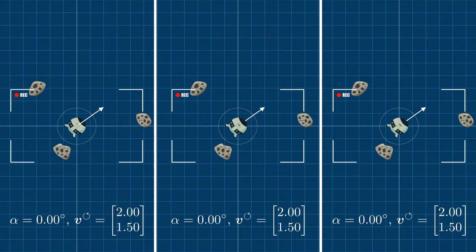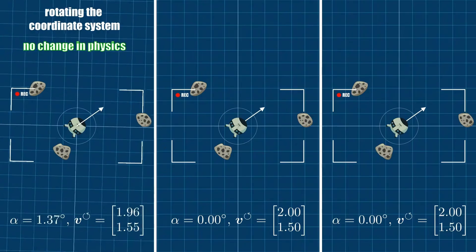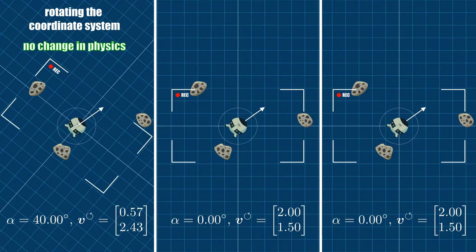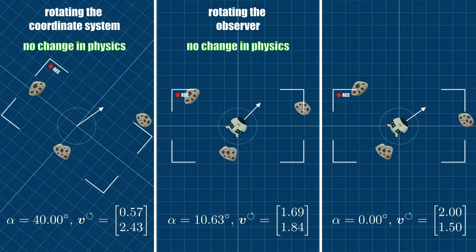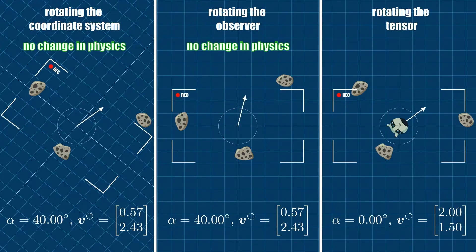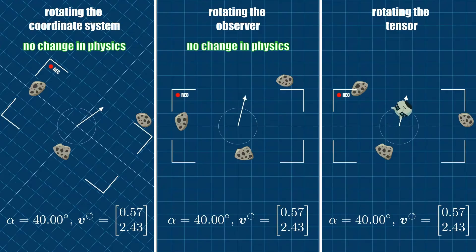To summarize, we have looked at three cases. In the first case we rotated the coordinate system, which didn't change the physics. In the second case we rotated the observer, which again didn't change the physics. But in the third case we rotated the tensor itself while keeping everything else fixed, and this did change the physics.